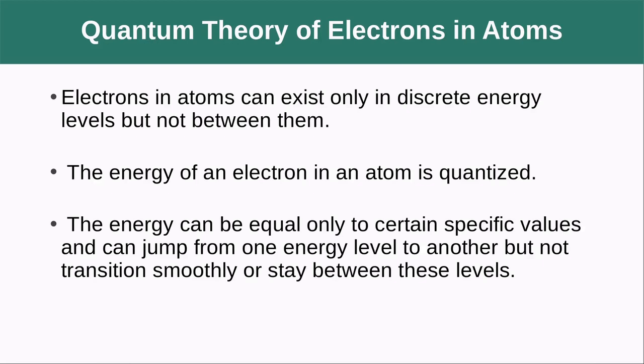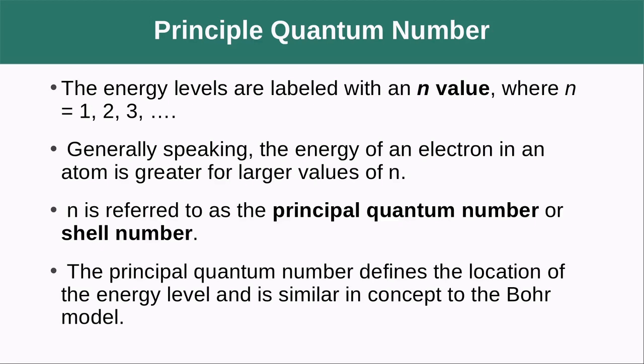Our takeaways: electrons in atoms can exist only in discrete energy levels, not between them. The energy of an electron in an atom is quantized, meaning energy can equal only certain specific values and can jump from one energy to another but cannot transition smoothly or stay between these levels.